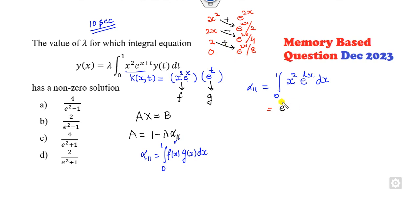So e raised to power 2x will be common: x squared over 2 minus x over 2 plus 1 over 4 over 0 to 1. So what is the right answer of this? e squared: 1 minus 1 will be cancelled, it's 1 over 4. e raised to power 0: 1 over 4. So right answer is e squared minus 1 over 4. So therefore, for the non-zero solution, what is the meaning of this non-zero solution? Determinant of A should be 0, that means 1 minus this should be 0.